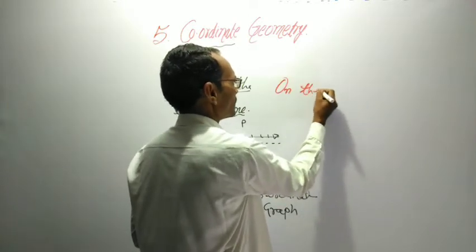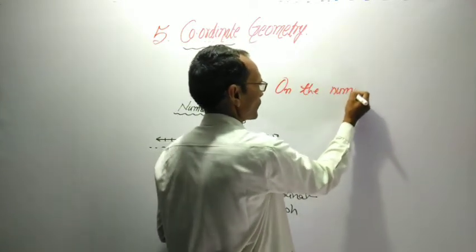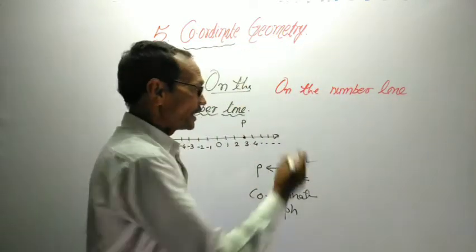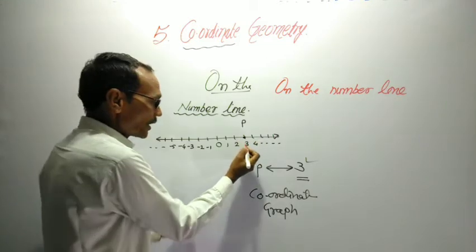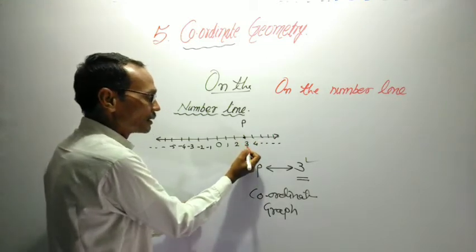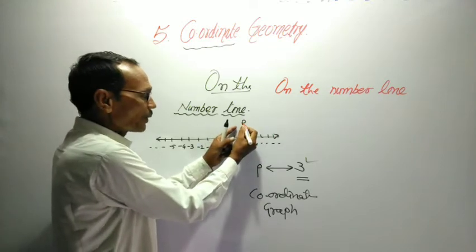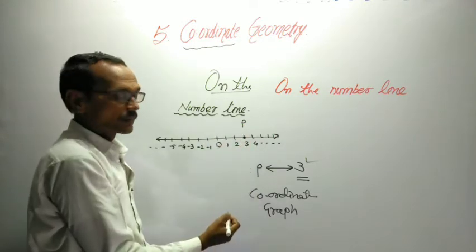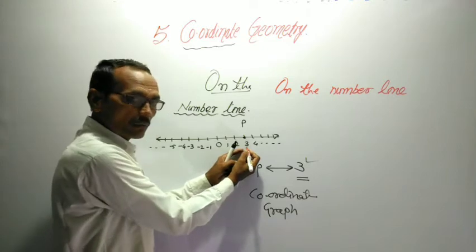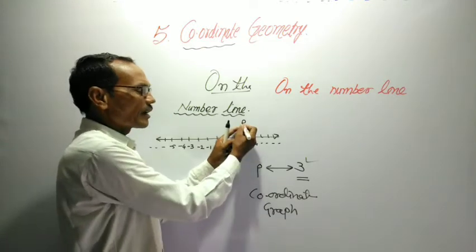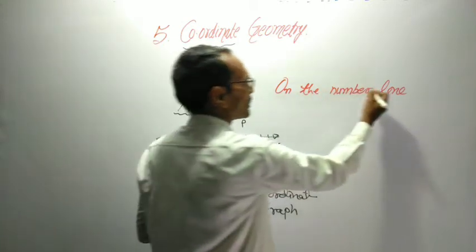On the number line, there is a real number associated with one and only one point. That real number is known as coordinate of that point.